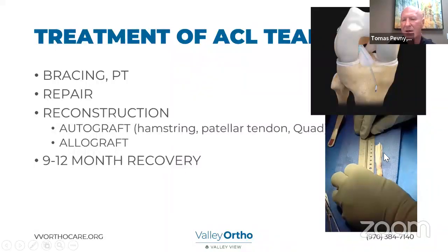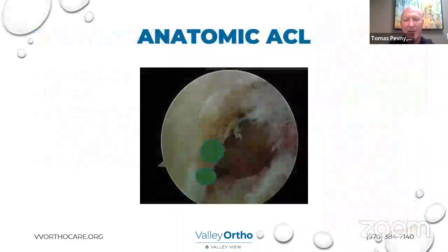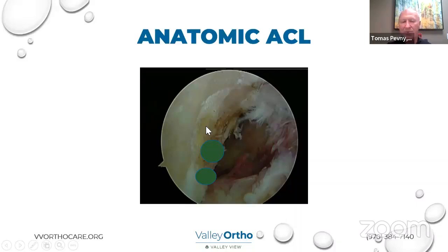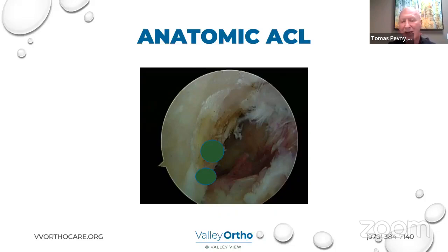This is the quad tendon graft — taken from the patient's knee right above the kneecap. We take a little piece of bone off the kneecap for bone-to-bone healing. This is what the graft looks like as we prepare it on the back table. Looking arthroscopically at a right knee, the most important thing technically is to put the ACL graft in an anatomic position — one of the main reasons these procedures fail is if the surgeon does not put the graft in the proper spot. The ACL has two bundles — anterior medial and posterolateral — and we try to incorporate that area with our drill placement.